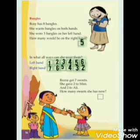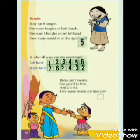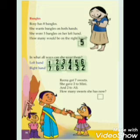Rina got 7 sweets. She gave 2 to Mini and 2 to Ali. How many sweets does she have now? Rina has 7 sweets. She gave 2 to Mini and 2 to Ali — total she gave 4 sweets. 7 minus 4. She has 3 sweets now.